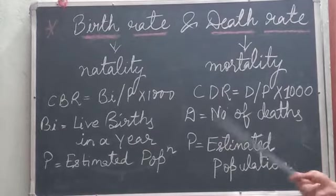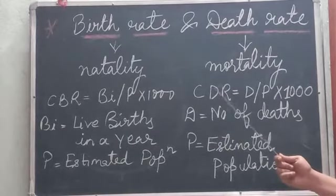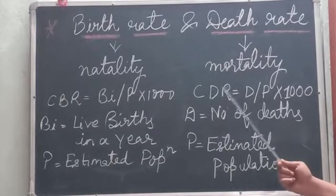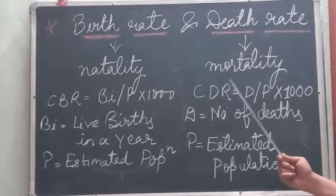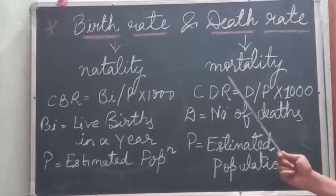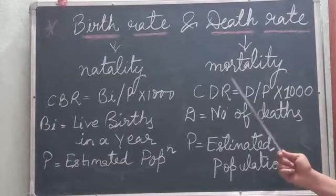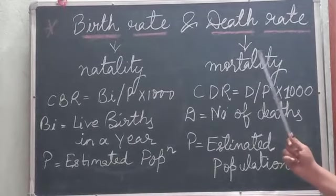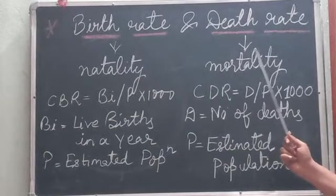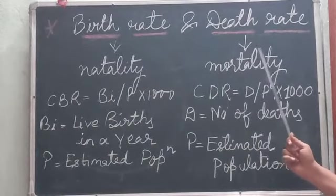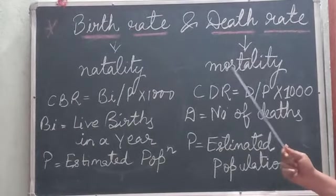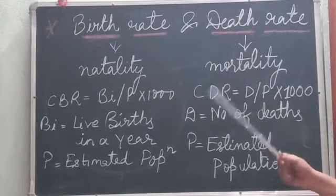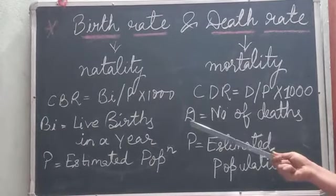For example, in 2017, the birth rate was 19.01 per 1000 individuals and the death rate was 7.21 per 1000 individuals.